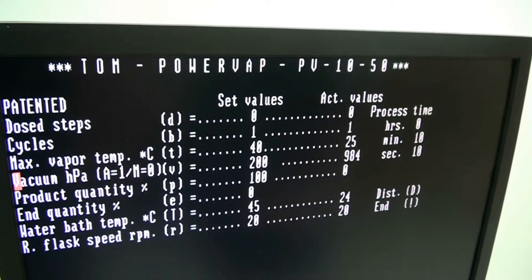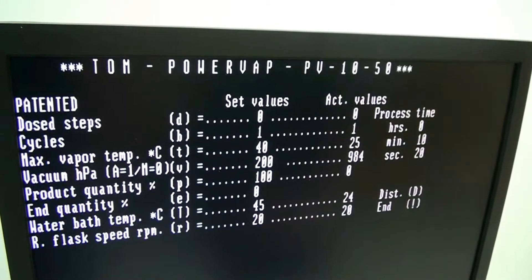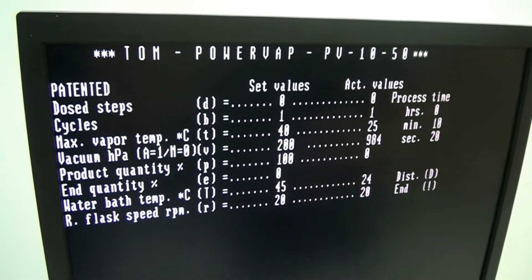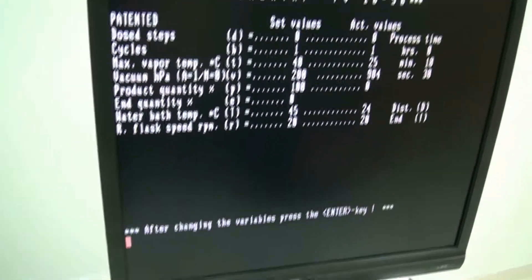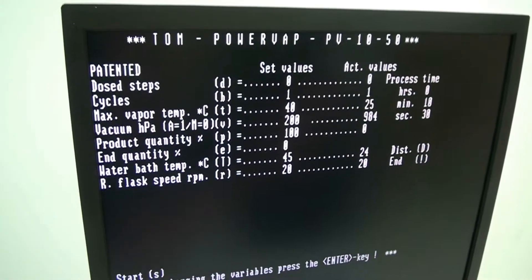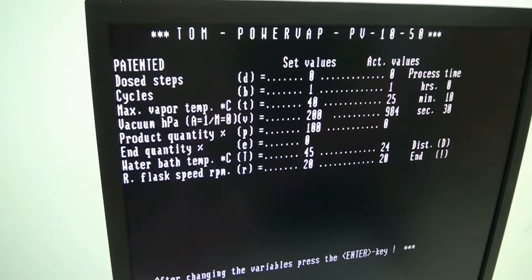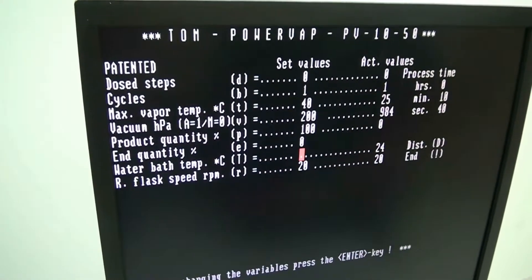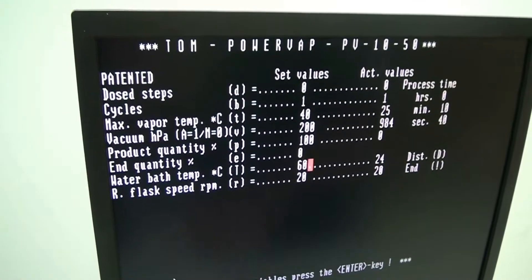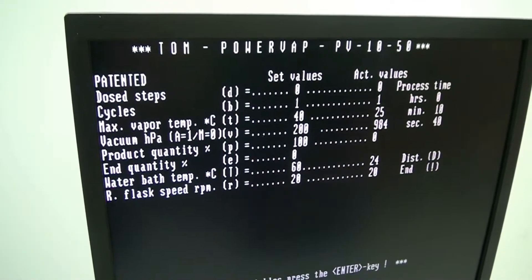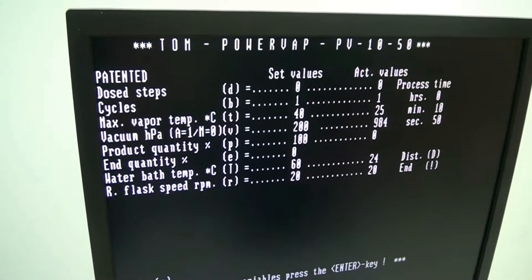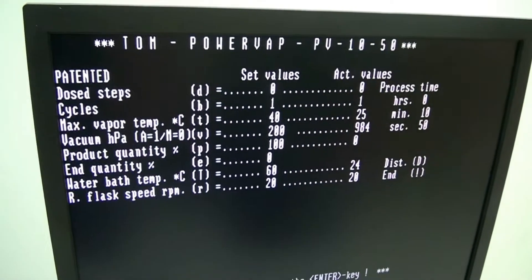When we press the start that is the setting it's going to use. If you want a warmer bath temperature, this one supports up to 60 degree bath temperature. Capital T takes you into the bath temp setup to a 60 degree mark. Again when you're ready to run, that's the setting it's going to use.